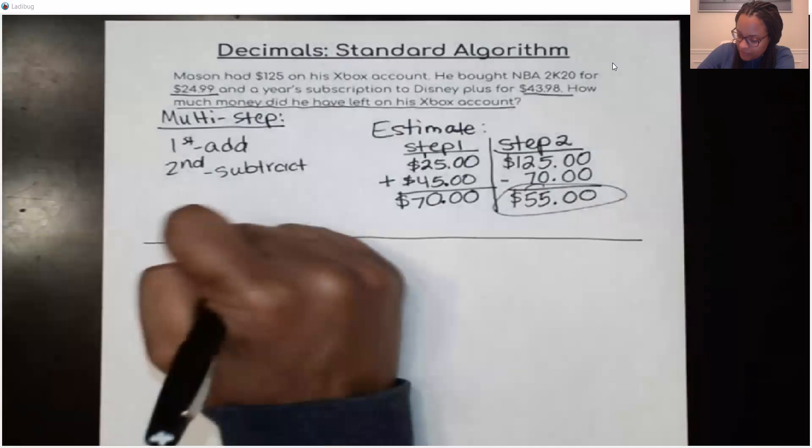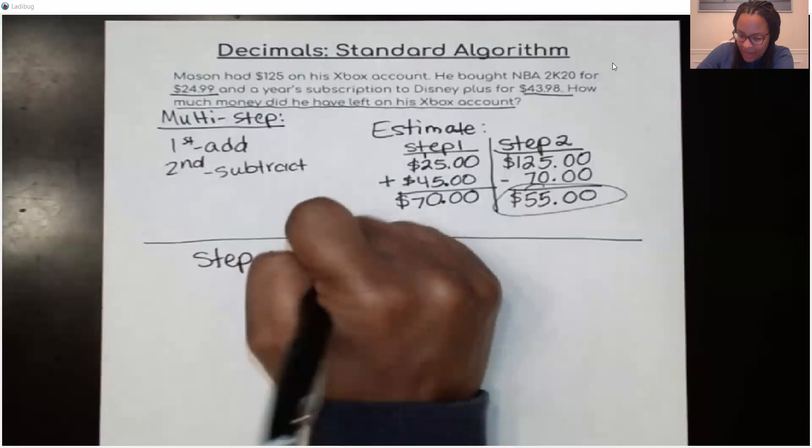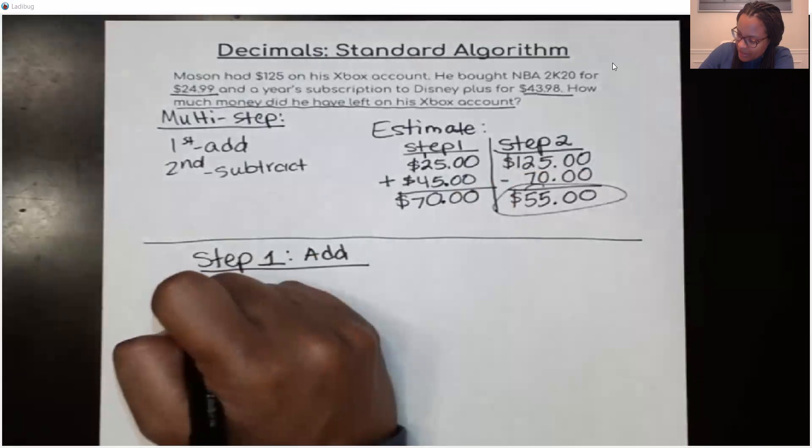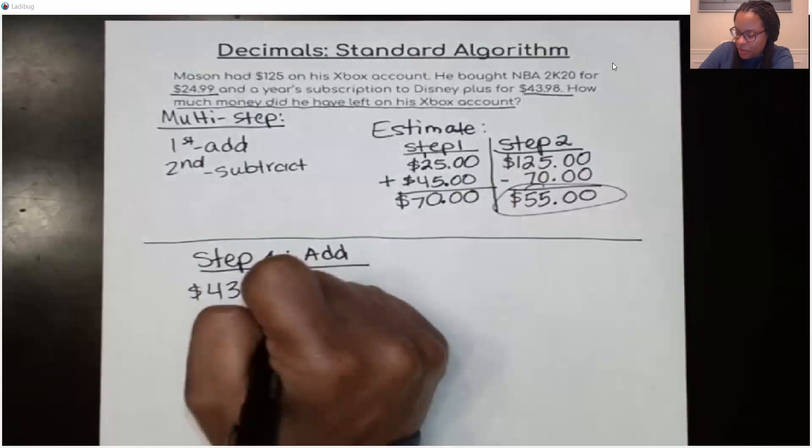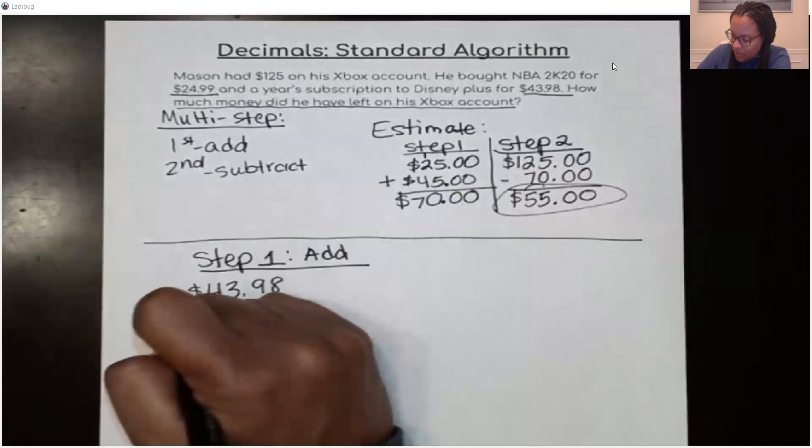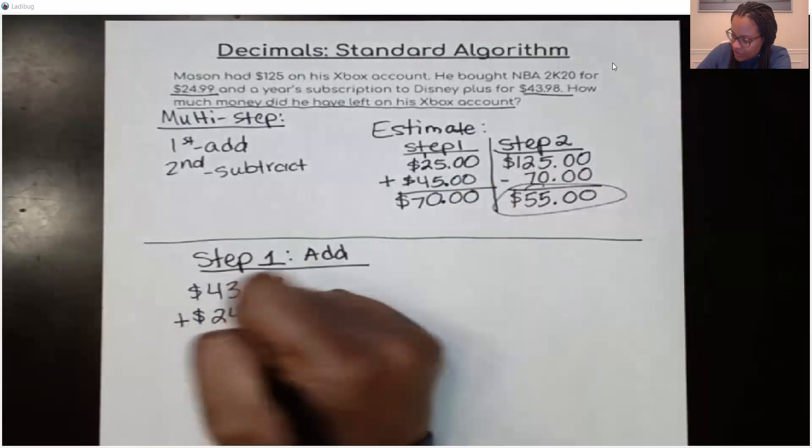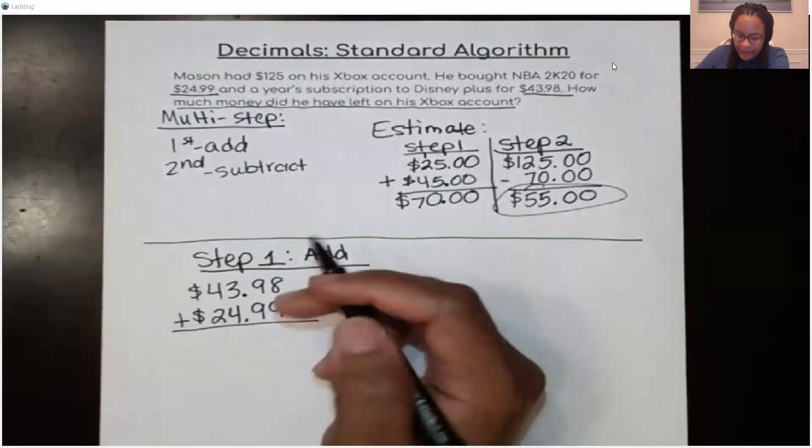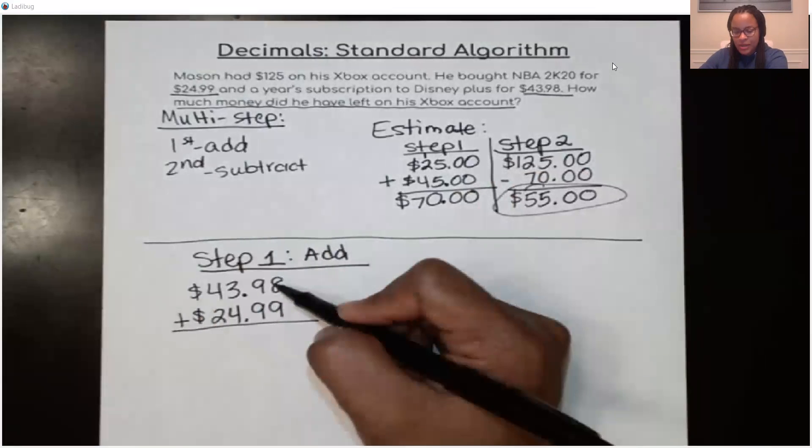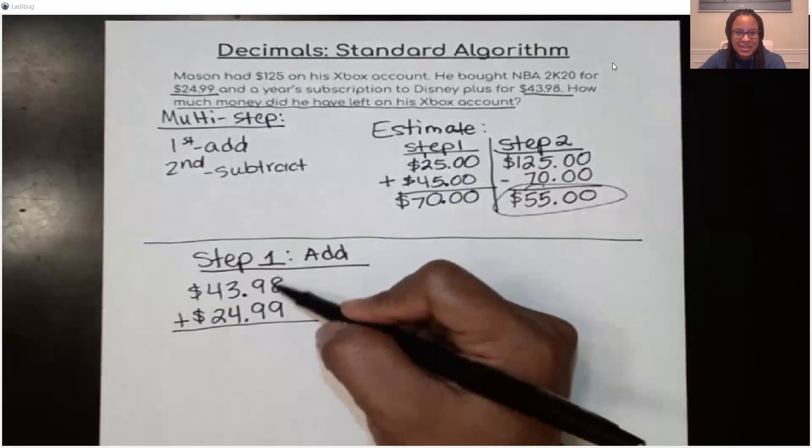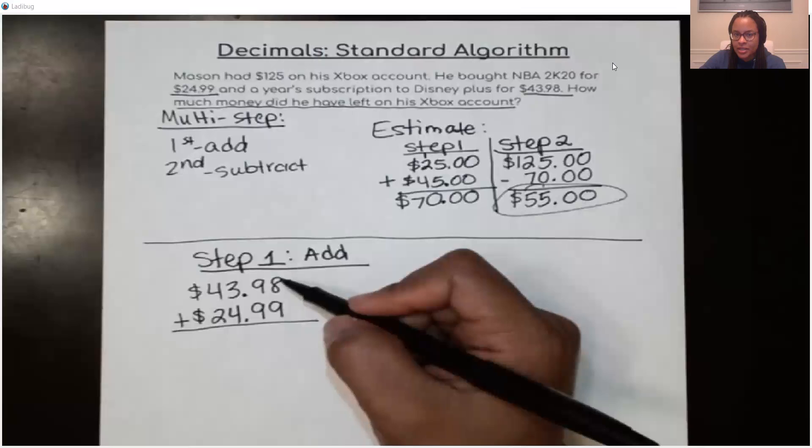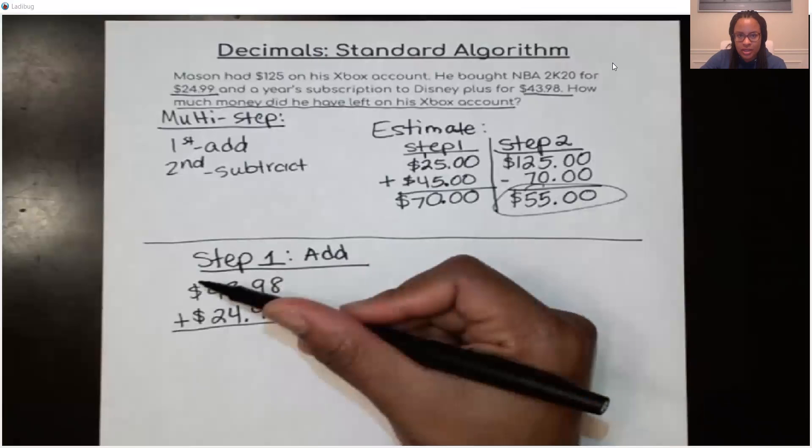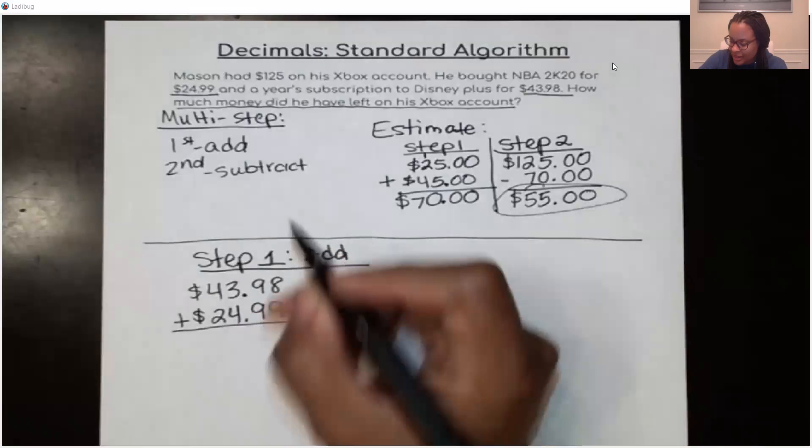So step 1. I was supposed to add. So I'm going to actually add the exact amount. So I'm going to add the $43.98. And it doesn't matter which one you put first. You can do $24.99 first if you want. And I'm going to, again, line up my decimals. This is very important when you're adding and subtracting. You do have to line up your decimals. And now I'm going to start in the hundredths place. So when we are adding and subtracting using the algorithm, you have to start on the right side and then move your way towards the left. All right? 8 plus 9 is 17.